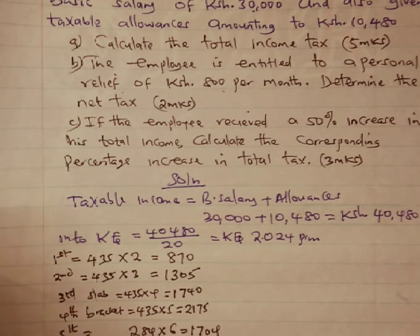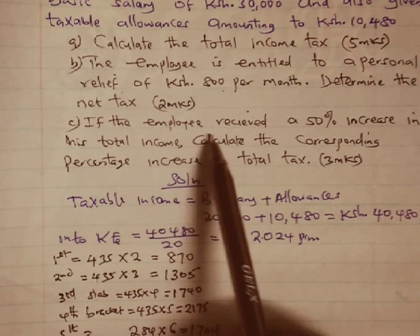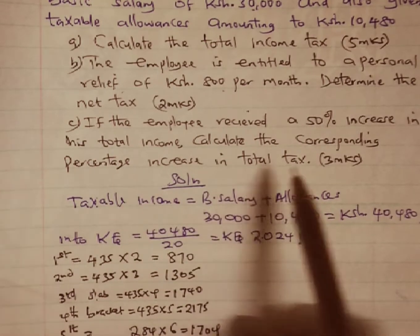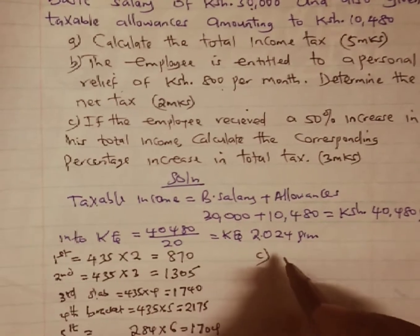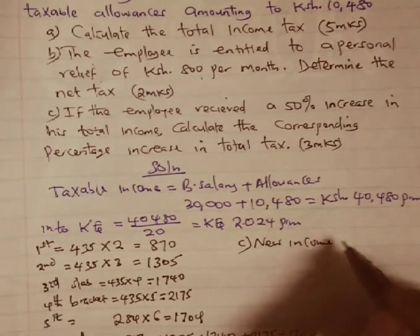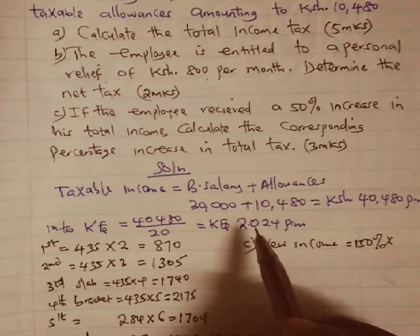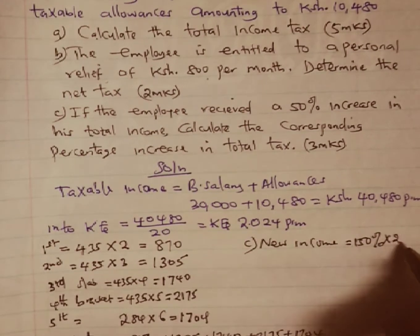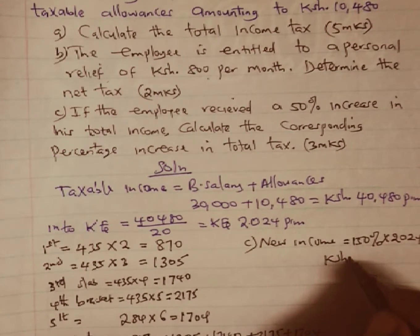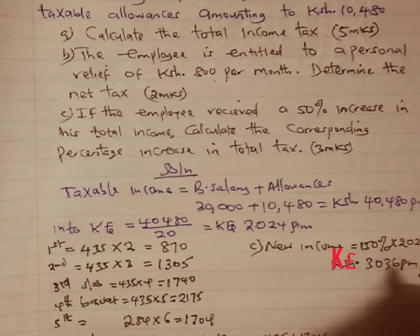We move to part (c). We are told that the employee received a 50% increase in total income. We need to find the new income. Since there is a 50% increase, the new income is 150% of the original 2,024 Kenyan pounds, giving us a total of 3,036 Kenyan pounds per month as the new taxable income.